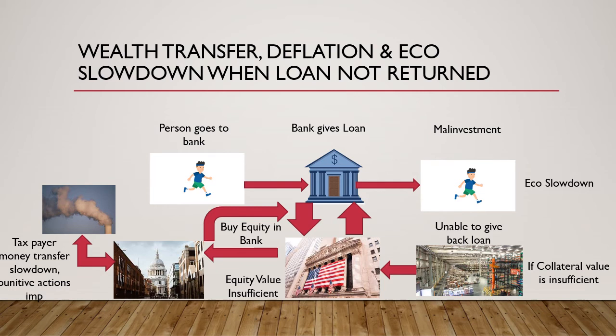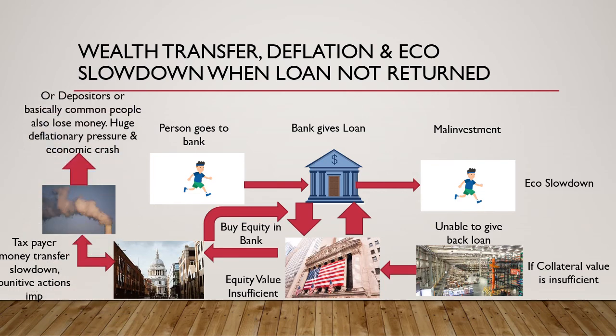Since they are using taxpayers' money to buy equity into the bank, it's very important that punitive actions are taken against people who are responsible for this mess, otherwise this phenomenon will repeat itself. The intervention of the federal government is required because otherwise we are in for a fourth scenario — a bigger mess — where the depositors, the common people, lose money. This would mean the banks have to write off large amounts of loans from their balance sheets, causing enormous deflationary pressures on the economy and an eventual economic crash.